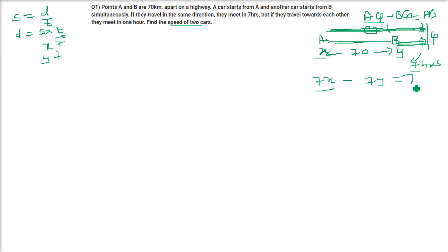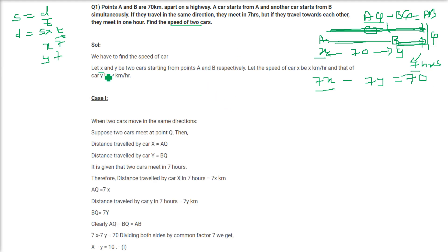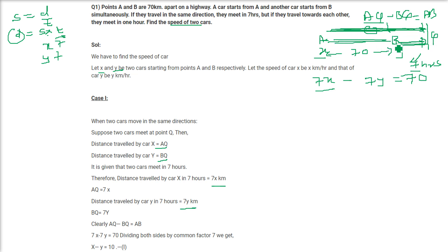So we are assuming X and Y as the speeds of the cars starting from A and B, X km/hr and Y km/hr respectively. The distance travelled by car A is AQ and by car B is BQ. Distance is speed into time, so 7X and 7Y. Since A-B equals AQ minus BQ, we get 7X minus 7Y equals 70, and dividing by 7 gives X minus Y equals 10. This is our first equation.